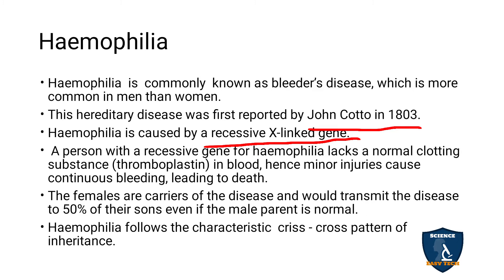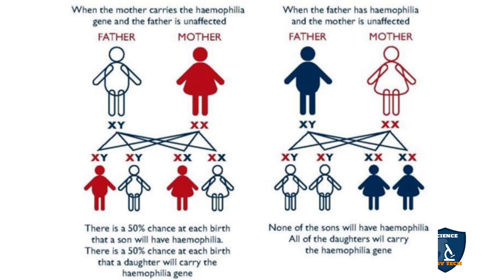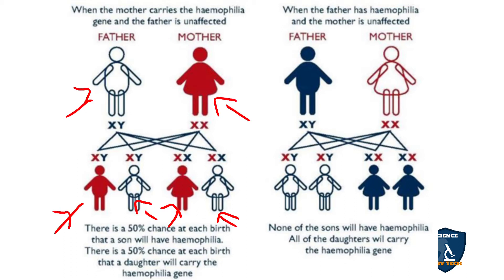When a normal male parent crosses with a carrier mother: the first son is affected with hemophilia, the second child is a normal male, and the daughters can be either carriers or normal. So 50% of daughters may be carriers.